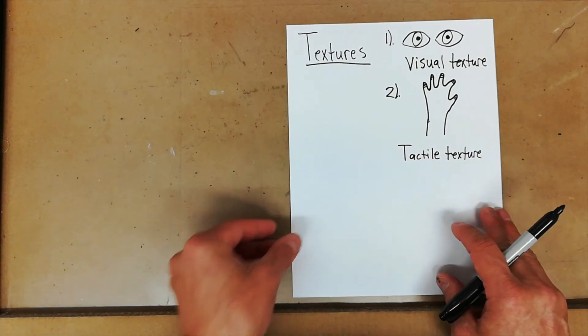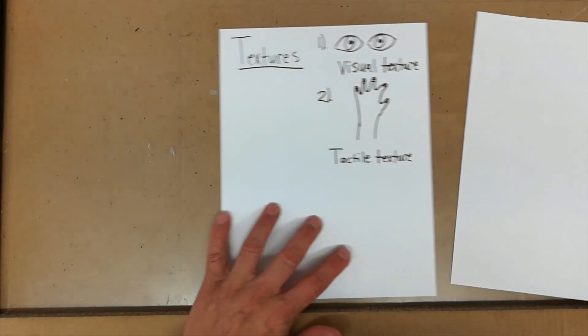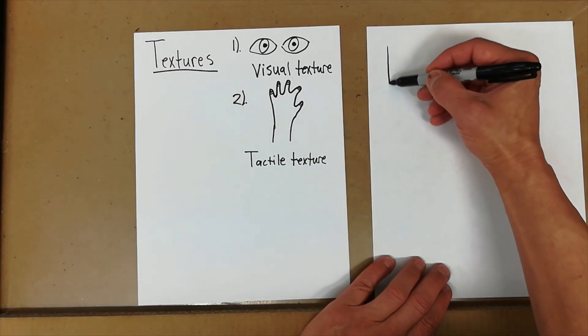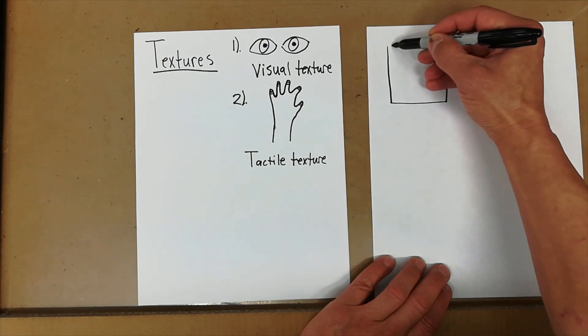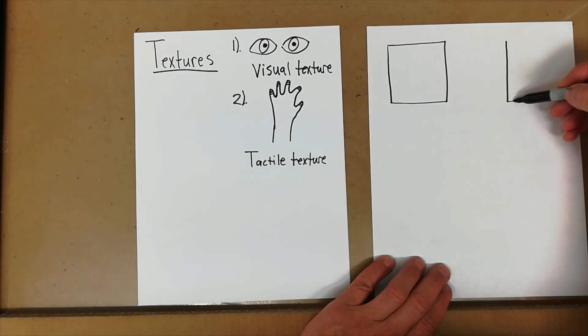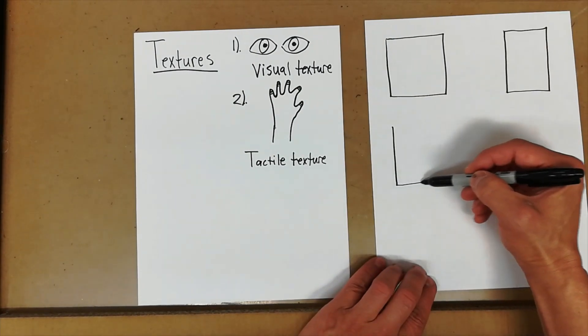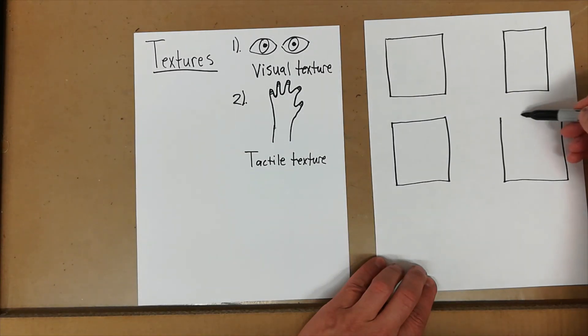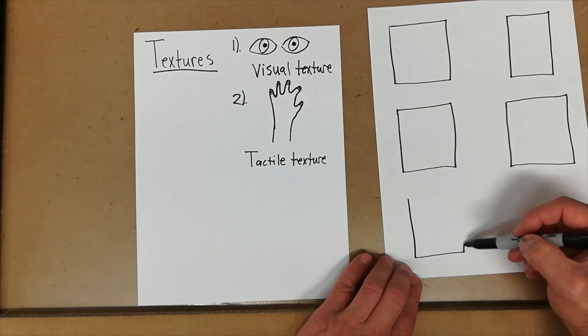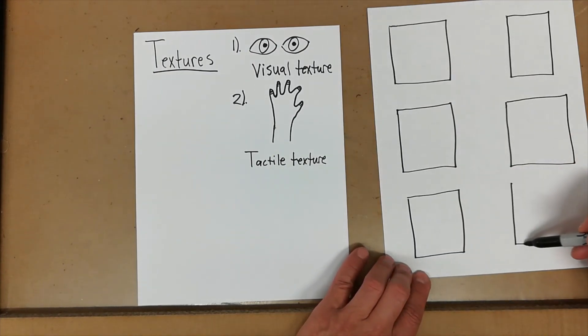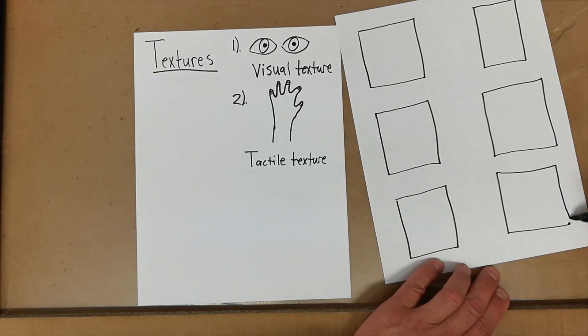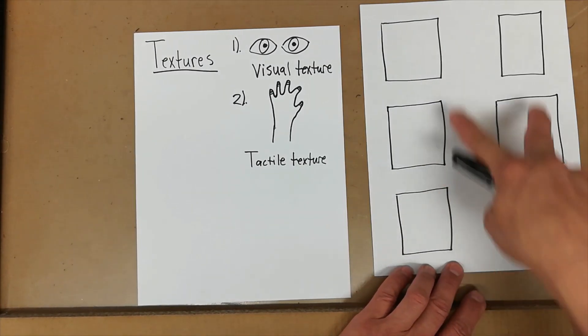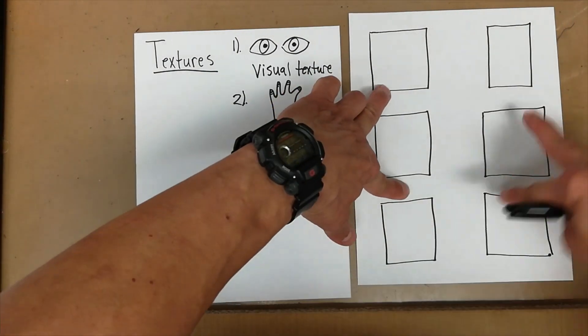You do not have to write this down. Just be aware of it. What I want you to do on your paper, we're going to draw six squares. You can have groups of two. Two at the top, two in the middle, two at the bottom. Two times three is six.